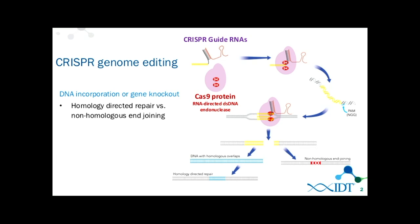CRISPR requires two components in the cell to function. You need your guide RNA, which is composed of two strands of RNA: the CRISPR RNA, which has the target-specific region in yellow, and that associates with the tracrRNA, which is a conserved strand that then associates with the Cas9 endonuclease. This directs the Cas9, when associated with the CRISPR-tracrRNA, to your genome, finding the area specific to your CRISPR RNA preceding a PAM motif — a protospacer adjacent motif — which in the case of the most common form, Streptococcus pyogenes Cas9, is NGG.